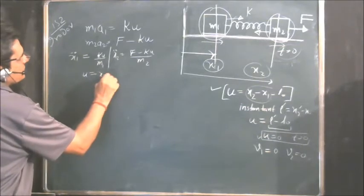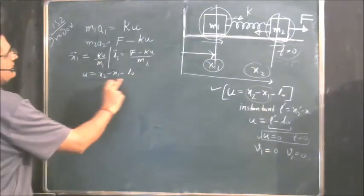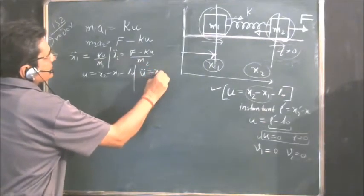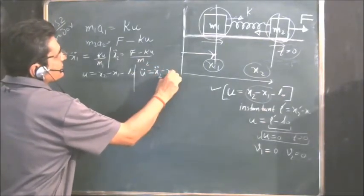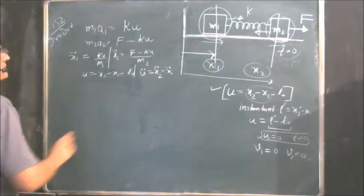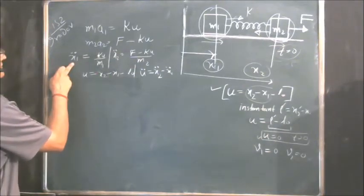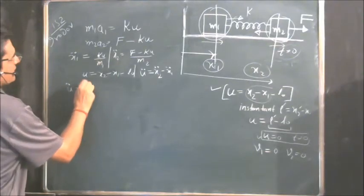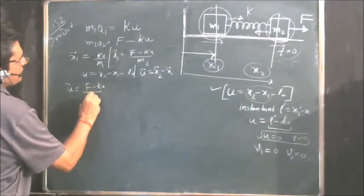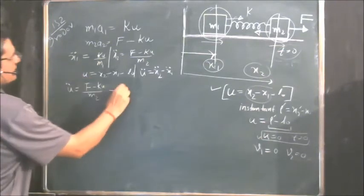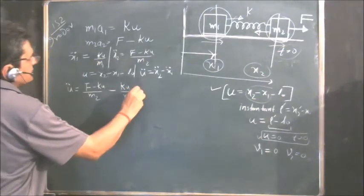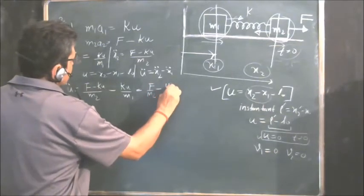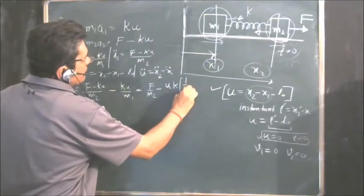u equals x2 minus x1 minus l0. Double differentiate it — l0 is constant so it vanishes. It becomes u double-dot equals x2 double-dot minus x1 double-dot. We know the values of x2 double-dot and x1 double-dot, so place them there. x2 double-dot minus x1 double-dot gives F upon m2 minus k·u upon m2, minus k·u upon m1, which equals F upon m2 minus k·u times (1/m1 plus 1/m2).